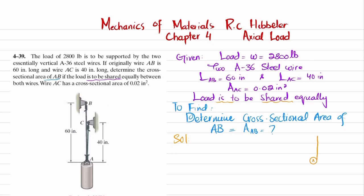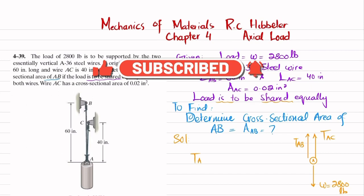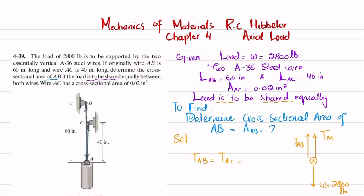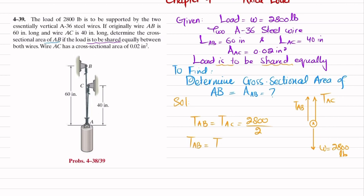There is a load acting downward at point A, W = 2800 pounds. At this point we have wires AB and AC. The force in wire AC is T_AC and the force in wire AB is T_AB. Since the load is shared equally, T_AB = T_AC = 2800 divided by 2, giving T_AB = T_AC = 1400 pounds.